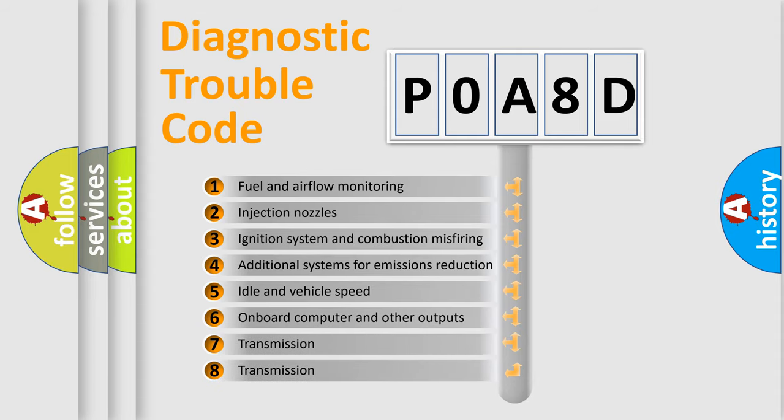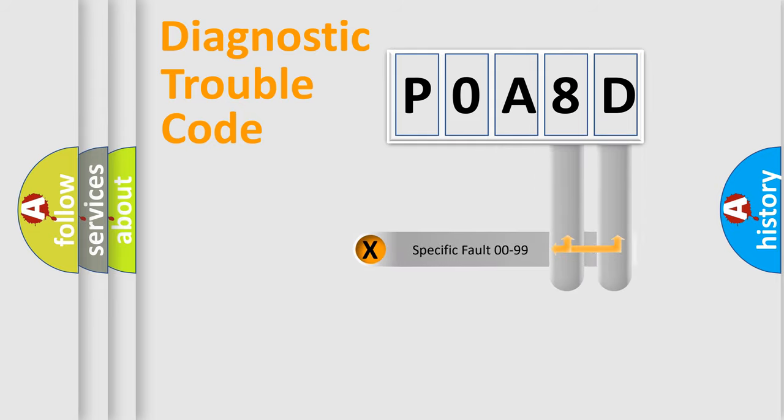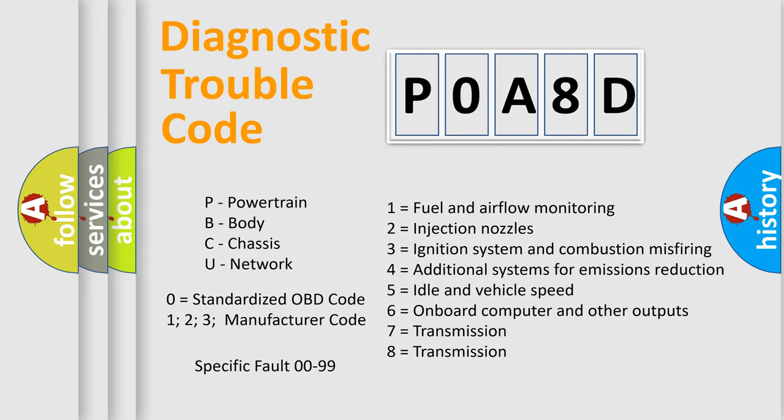The distribution shown is valid only for the standardized DTC code. Only the last two characters define the specific fault of the group. Let's not forget that such a division is valid only if the second character code is expressed by the number zero.